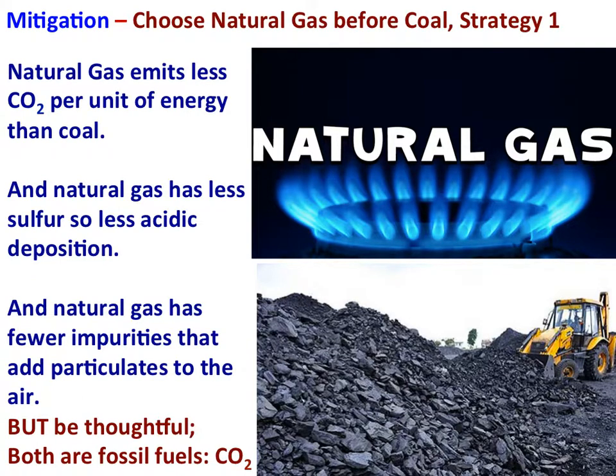A mitigation strategy to reduce the causes of climate change would be to choose natural gas before coal. Natural gas emits less carbon dioxide per unit of energy than coal. But be thoughtful — both of these fuel forms are fossil fuels and both release substantial amounts of carbon dioxide.